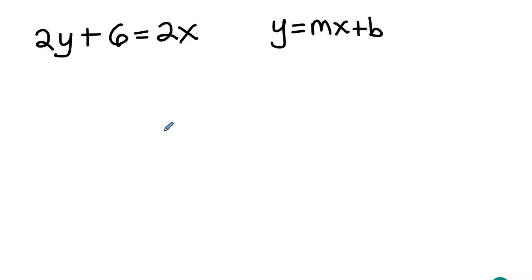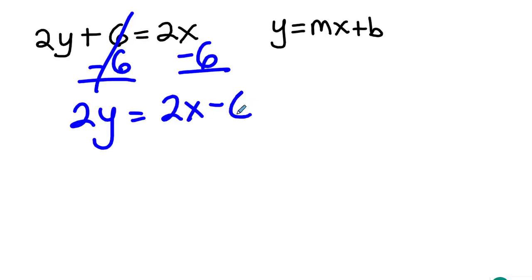So the first thing that I'm going to do is subtract the six on both sides. Bam. And then we got 2y equals 2x minus 6.